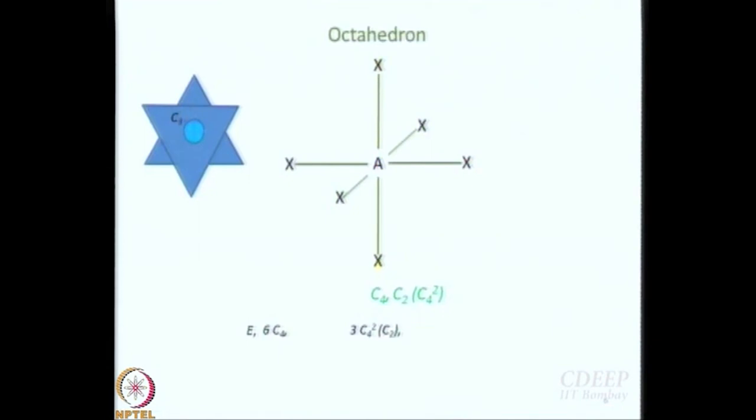How many C3 axes will there be? Four. So it is basically 3-dimensional space — you can divide the top part into 4 quadrants and the bottom part into 4 quadrants. The C3 axis goes through the center and between two diagonally opposite quadrants. Each C3 gives C3 and C3 squared, so 8 C3 operations.